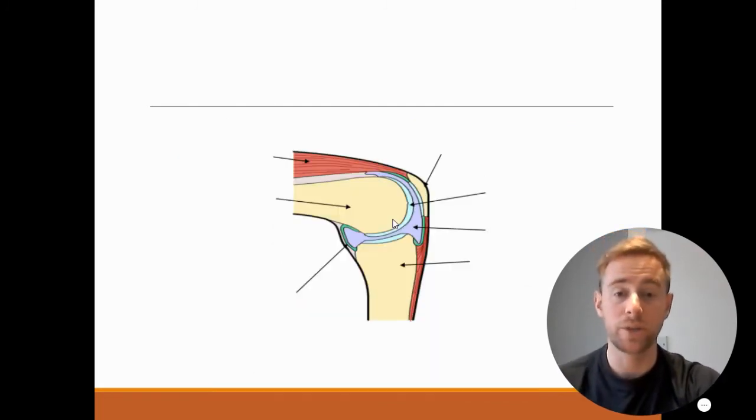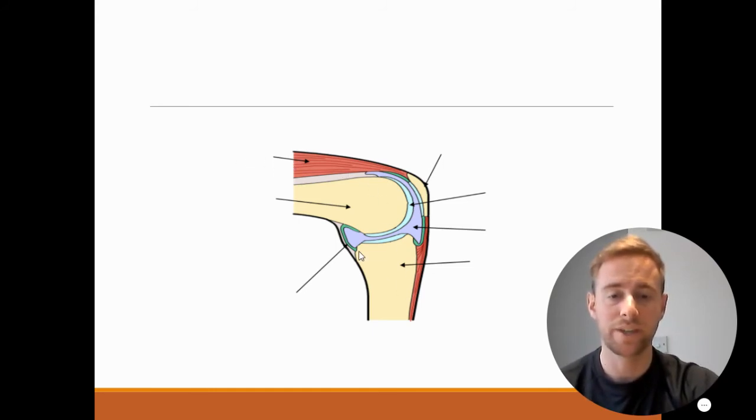Now we've got the points that you need to know. What I'm going to do now - this is a knee - we're going to go through these and you're going to try and identify them as we go through. So I want you to look at these now and write down: this is number one, this is number two, number three, number four, number five, number six, and number seven.